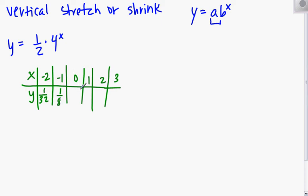4 to the 0 power is 1, which is going to give me 1 half. And 4 to the 1st is 4, so 4 times 1 half is 2. 4 squared is 16 times 1 half is 8. 4 cubed is 64 times 1 half is 32. Notice this pattern. 1 over 32, 1 over 8, 1 over 2, 2, 8, 32.